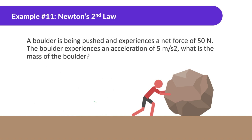A boulder is being pushed and experiences a net force of 50 newtons. The boulder experiences an acceleration of 5 meters per second squared. What is the mass? Mass equals net force divided by acceleration — 50 divided by 5 — so the mass is 10 kilograms.